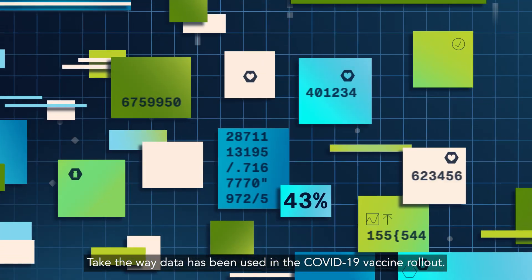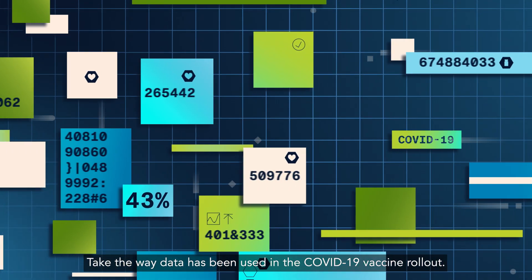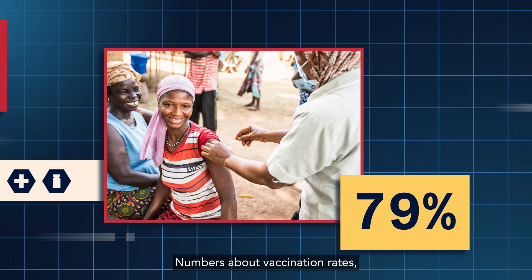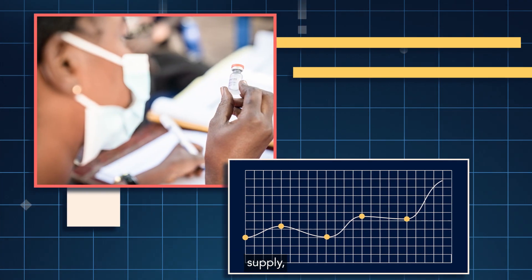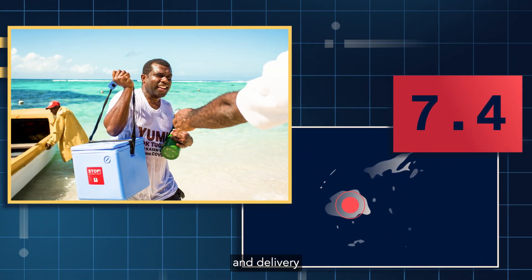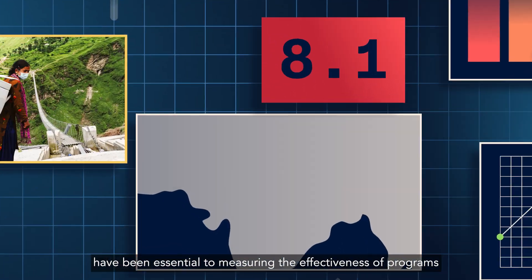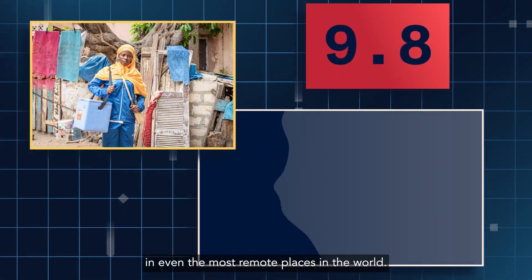Take the way data has been used in the COVID-19 vaccine rollout. Numbers about vaccination rates, supply, and delivery have been essential to measuring the effectiveness of programs in even the most remote places in the world.